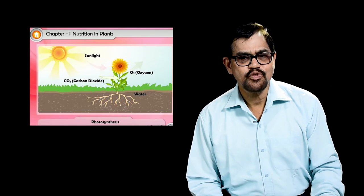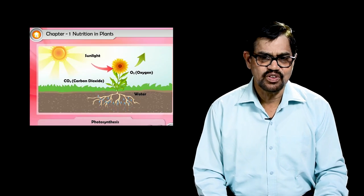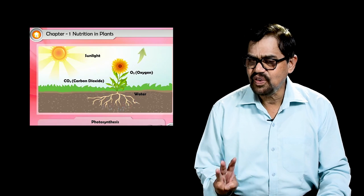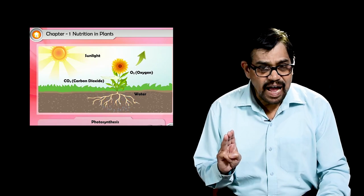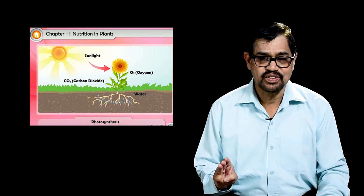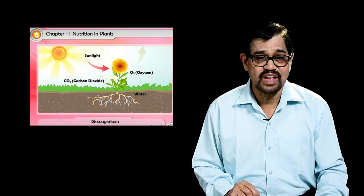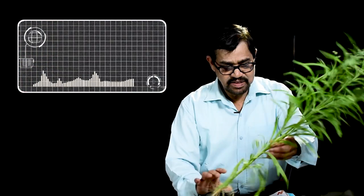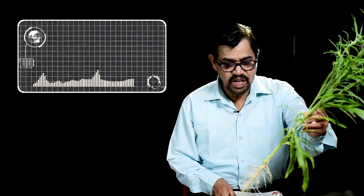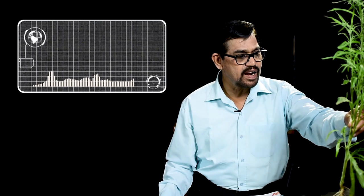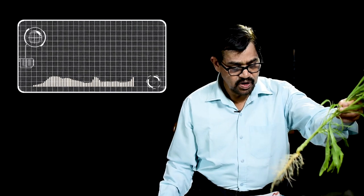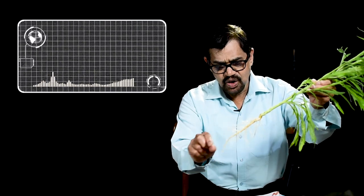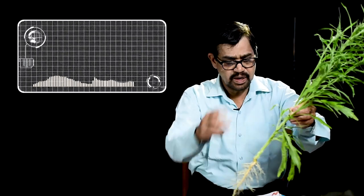What are the requirements for photosynthesis? Basically three things: water, carbon dioxide, and sunlight, which we get from the sun. Here I have a plant — it's a weed that was growing in my garden and I had to uproot it. You can see the root part and the shoot part.